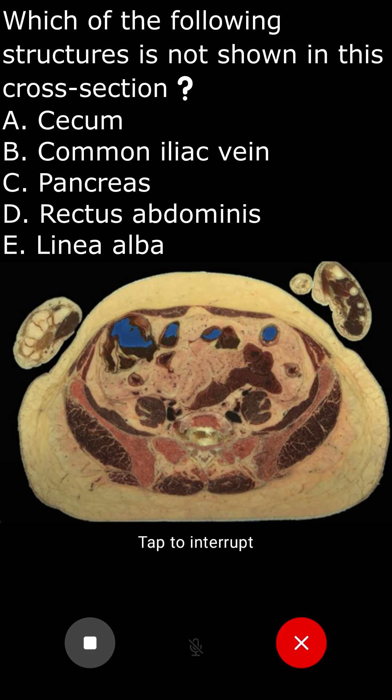Reason 1: Cecum. The cecum is part of the large intestine and is typically found in the lower right quadrant of the abdomen. It can be seen in cross-sectional images of the lower abdomen.